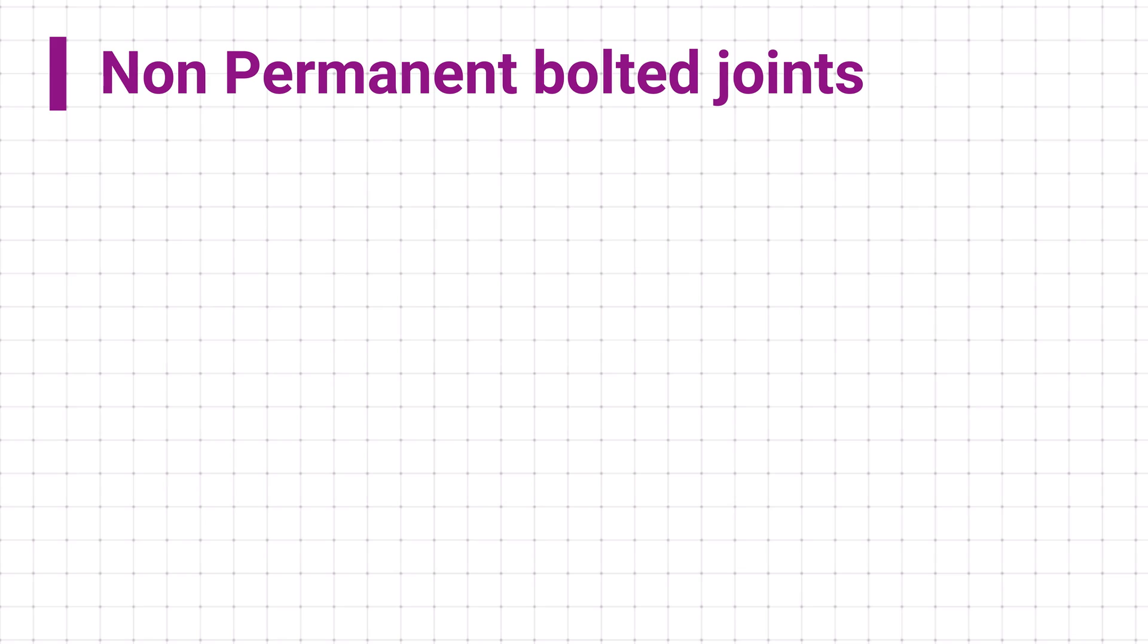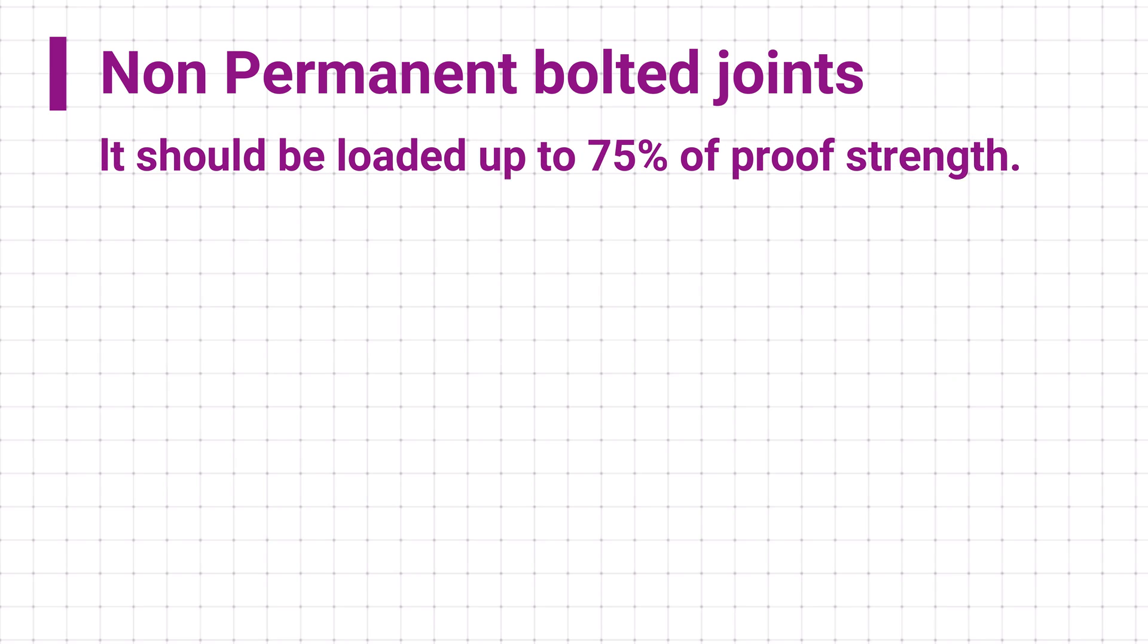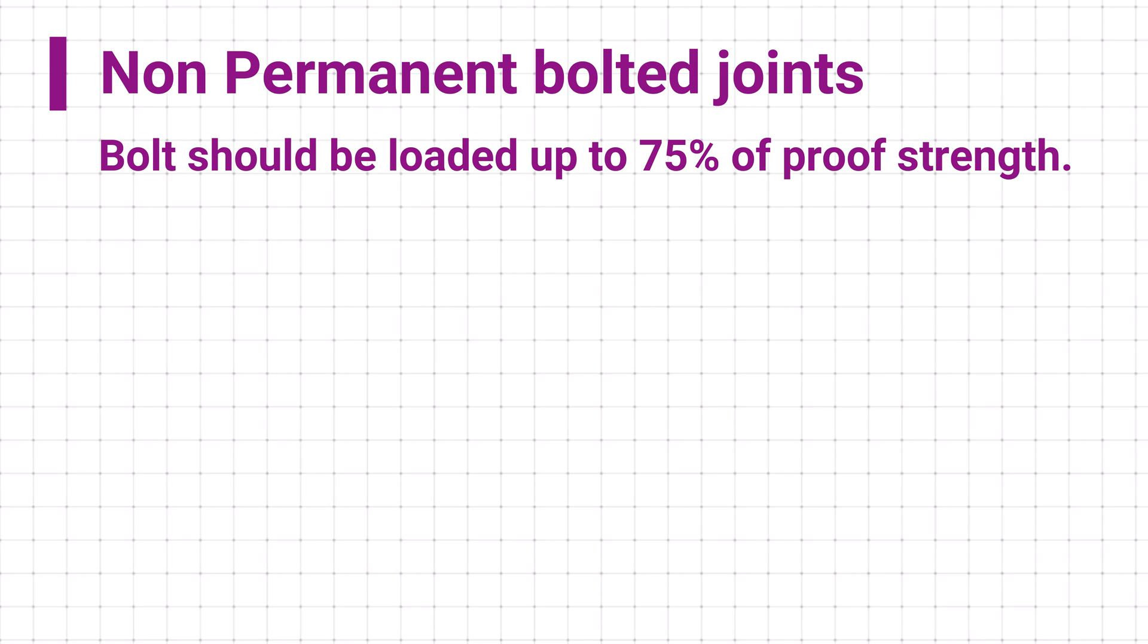In case of non-permanent bolted joint where we want to reuse bolts, in such applications bolt should be loaded up to 75% of its proof strength. This is to avoid permanent deformation in bolts.